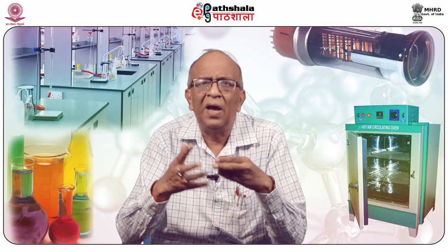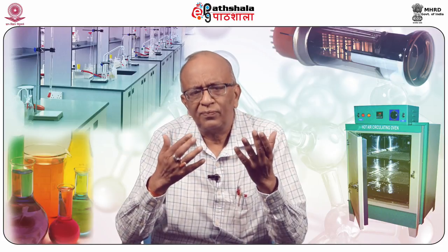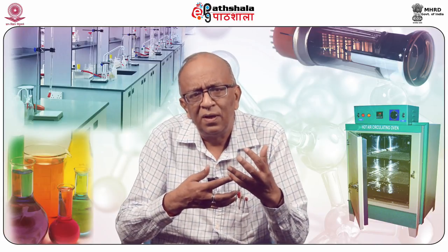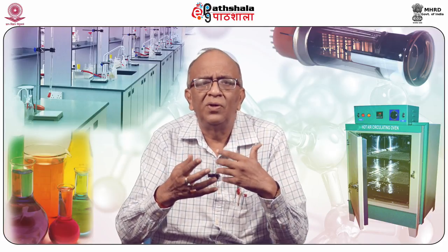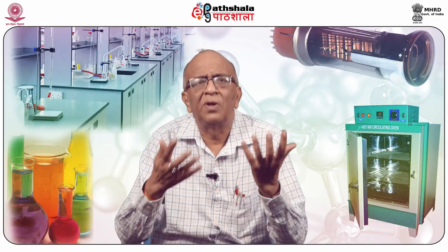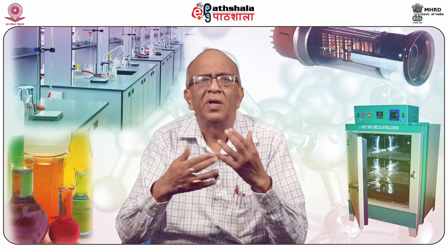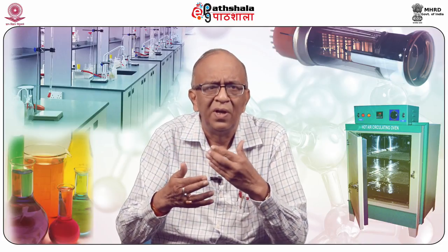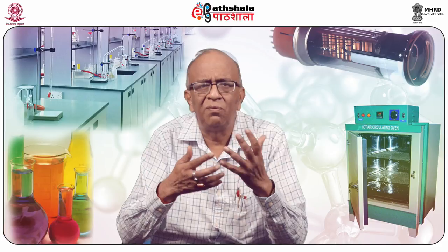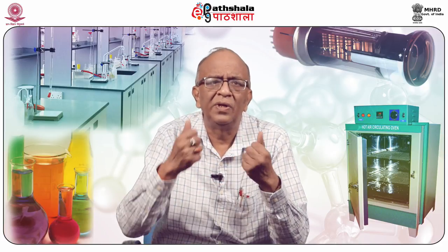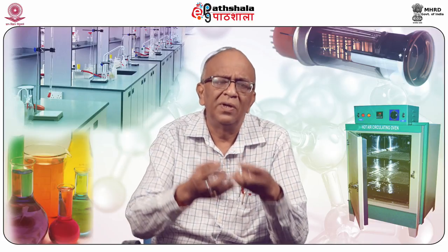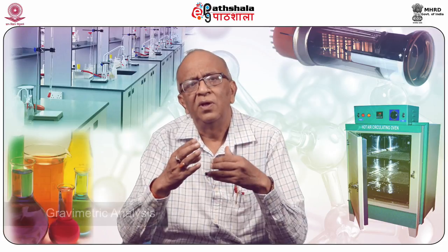For example, if we are asked to find out the concentration of silver in a given solution, we add a substance with which it forms a solid precipitate like silver chloride. If nickel is present, we add dimethylglyoxime and it forms a precipitate of nickel dimethylglyoxime. We filter it, take the weight, and by back calculation find out the concentration of the analyte in solution. This is gravimetric analysis.